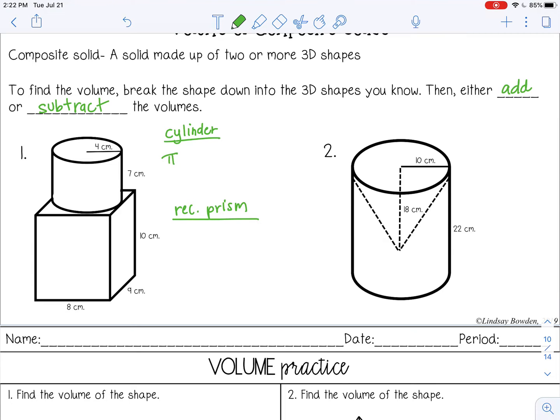So for the cylinder, it's pi r squared h. So pi 4 squared times 7. And I get about 351.9. You may not want to round as much on the individual shapes, just round at the very end. So you can just leave it in your calculator 351.858. It's going to give you a more accurate answer.